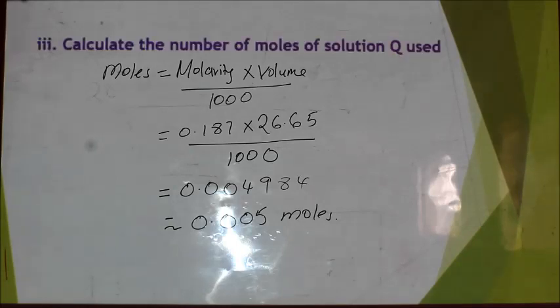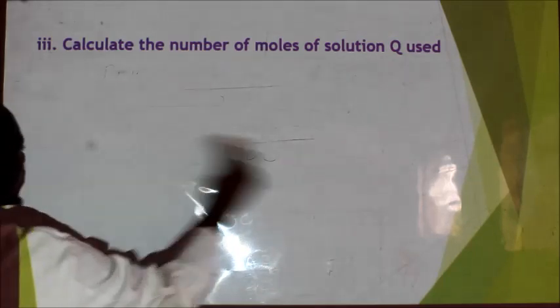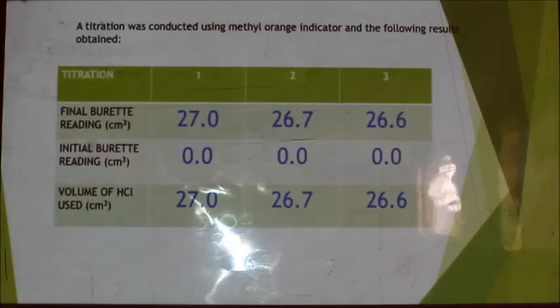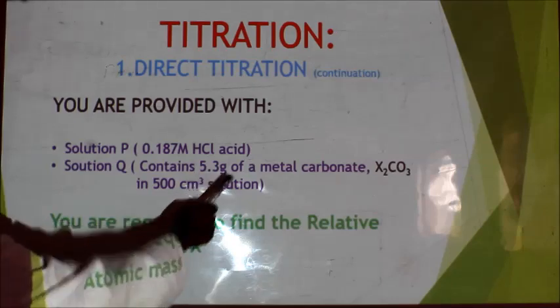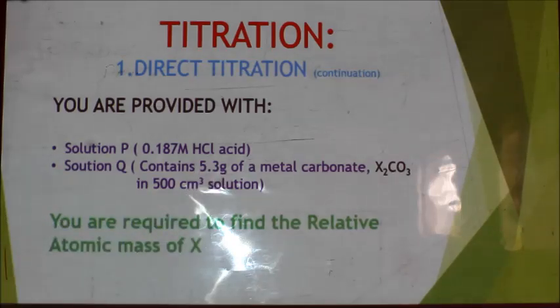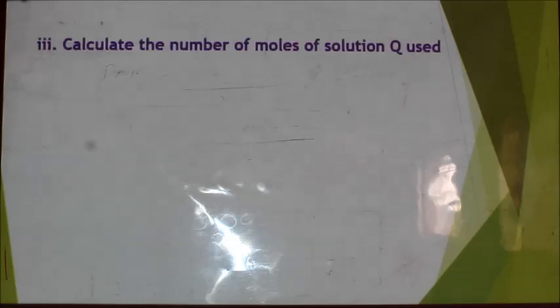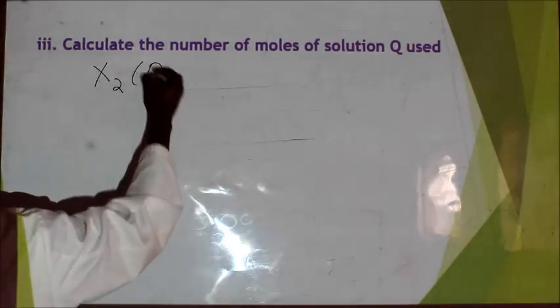The next question shifts our attention to solution Q. We check if we have the molarity of solution Q — we have not been given it. We are only told it is 5.3 grams of a metal carbonate dissolved in 500 cm³ of distilled water. That information is not enough to calculate moles directly, so we first write the equation for the reaction between Q and P.